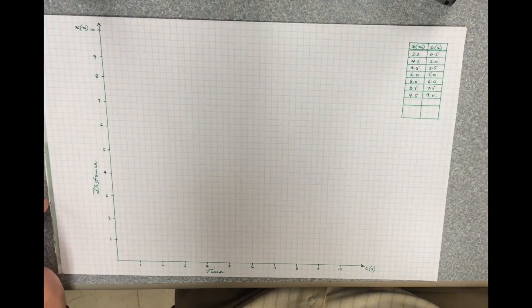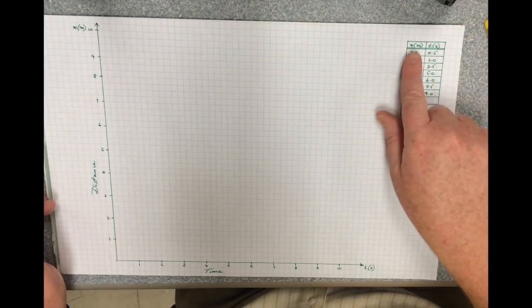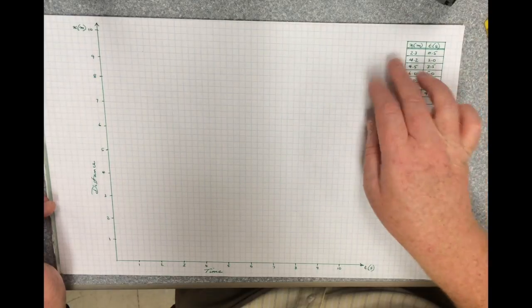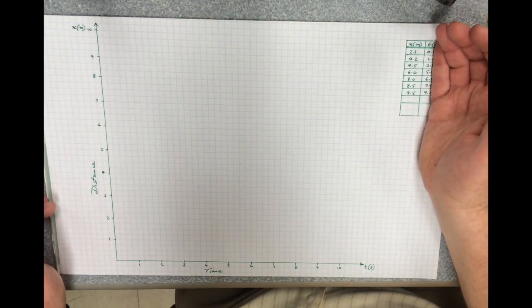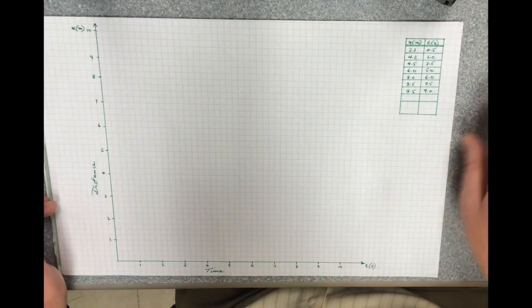I've got my data set over here in a little table and I've sort of set this up inconveniently because it would have been better if we were plotting ordered pairs to put my horizontal axis on this side and my vertical axis on the other, but it doesn't really matter.